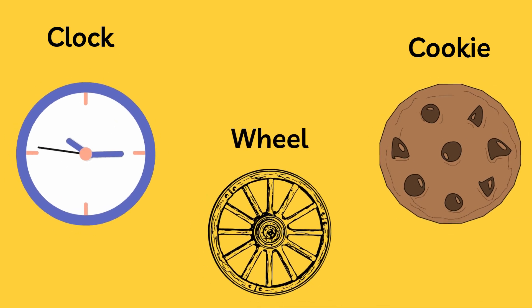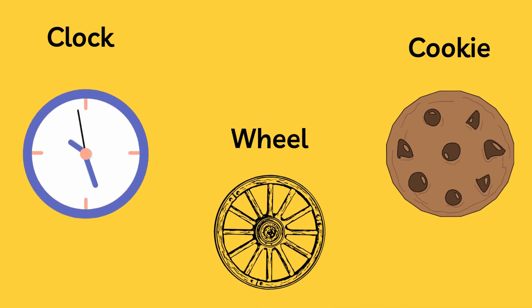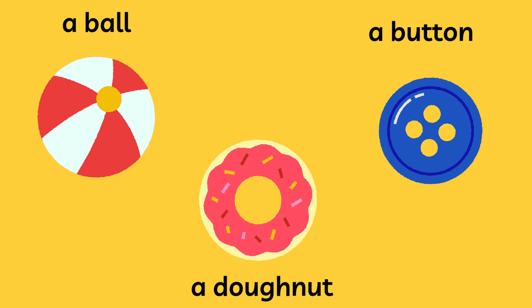Circles are everywhere. You can find them in a clock, a wheel, or even a delicious cookie. Here are some examples of circles in our daily life: a ball, a button, a doughnut.